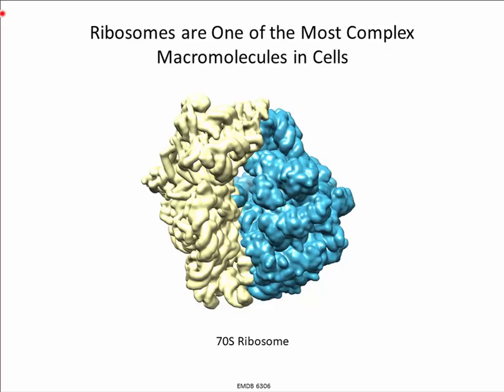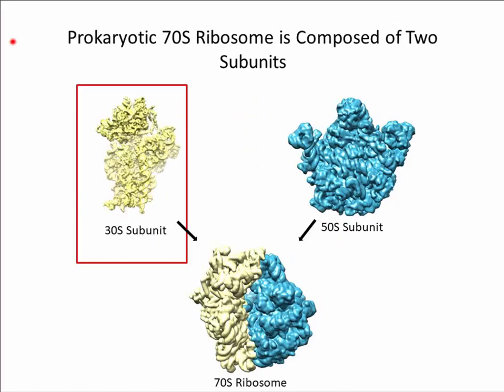Despite the large size and extreme complexity of this magnificent machine, bacterial cells can assemble thousands of fully functional ribosomes within mere minutes with terrific precision. This makes it a fascinating model system for understanding the assembly of biological macromolecules. Furthermore, although the ribosome serves as a platform for targeting antimicrobials, the biogenesis pathway itself remains to be utilized and could provide a new source for novel therapeutics.